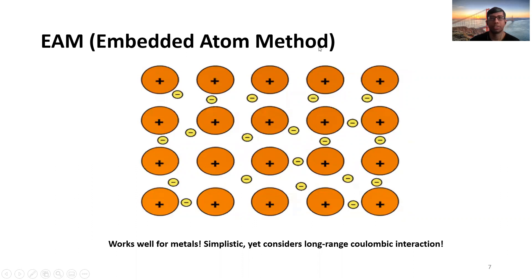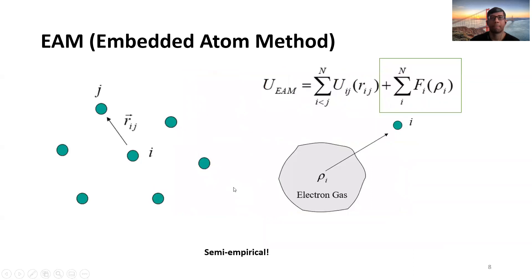That's why this kind of pair potentials or interatomic potentials actually works well for metals. As we can remember, previously in the pair potential there was only one term, the empirical term.